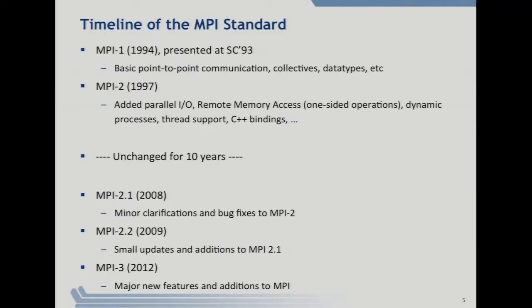After MPI 1 came out, there were two kinds of reactions. One was that it was too big - it had about 128 functions. Other people said that's too small, because you've left out various things. So in MPI 2, the process started fairly soon after MPI 1 was released, and it added parallel I/O, remote memory access or one-sided operations, dynamic process management by which one MPI program can start another, and so forth.